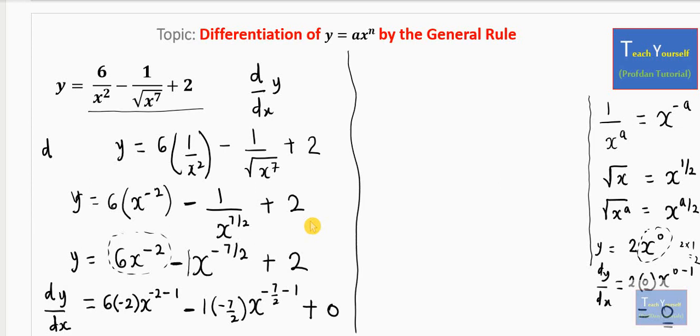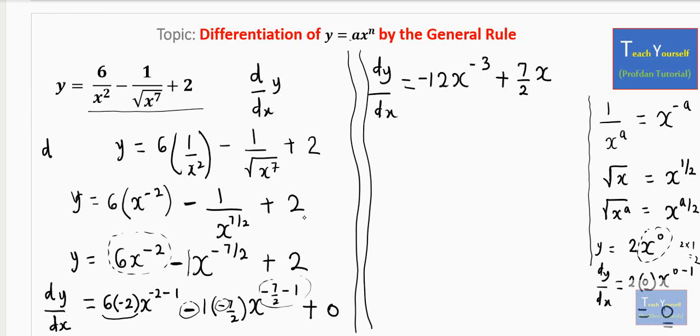And so finally, we can have a result. The dy/dx is going to give us: we have 6 times minus 2, that is minus 12 x^(-3). Then we have here negative times another negative, it's going to give us positive 7 over 2. And then we have x^(-7/2 - 1), which gives us minus 9 over 2.